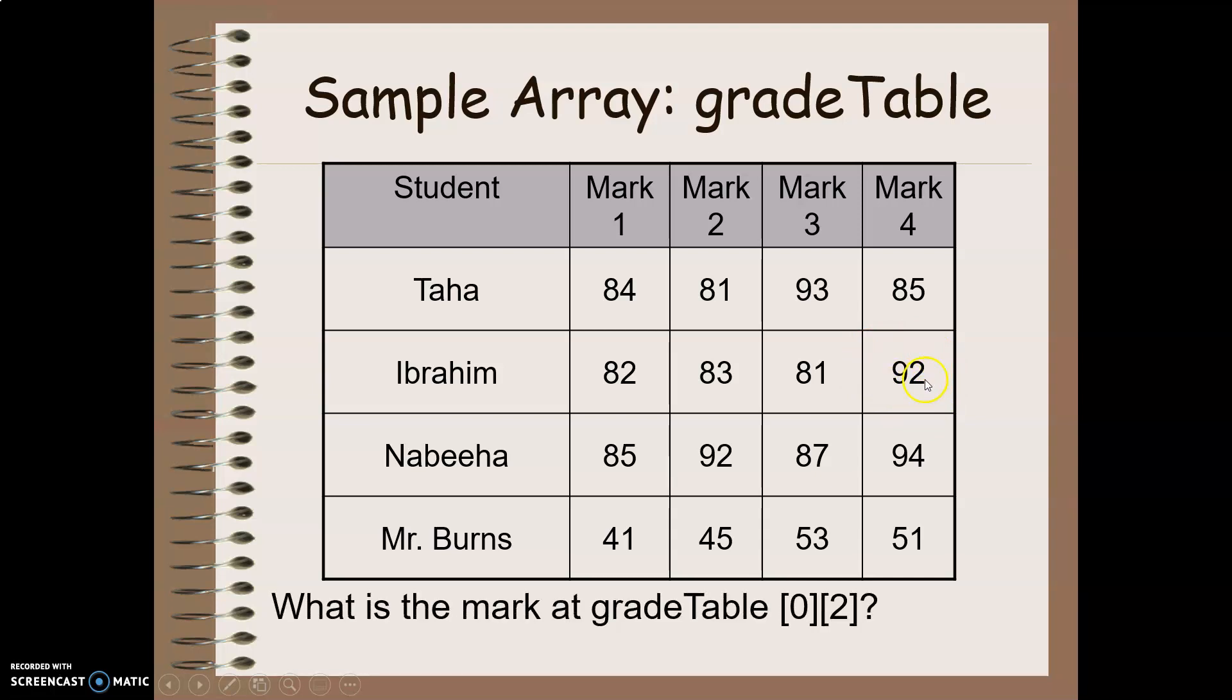Let's try another example. gradeTable[0][2]. So again, row zero, so I'm in row zero, column zero, column one, column two. I'm going to end up with a grade of 93.